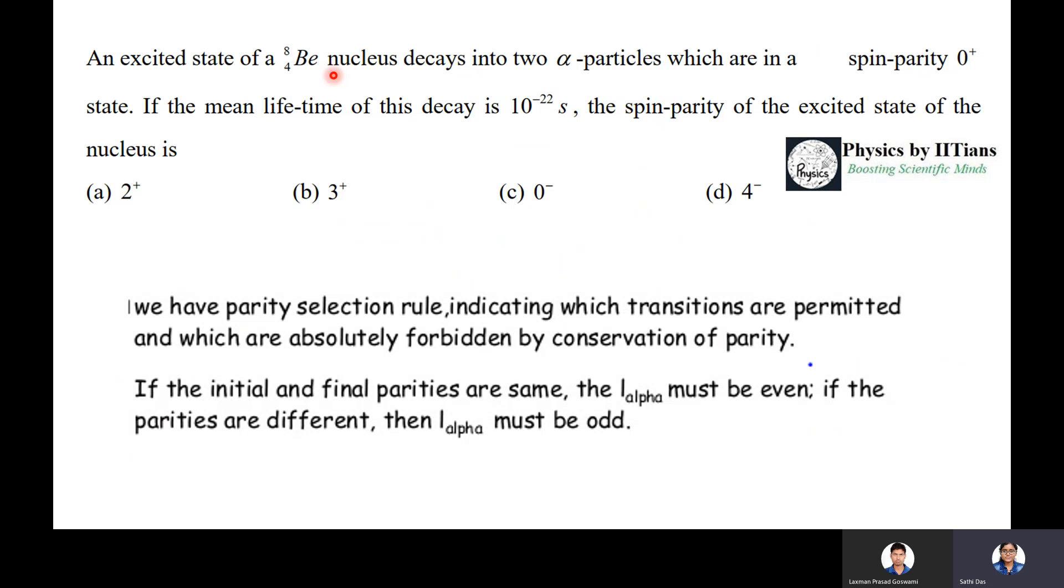The first thing is the excited state of the beryllium nucleus decays into two alpha particles. Don't worry about this. You should focus on the spin parity of the beryllium nucleus. The spin parity of the beryllium nucleus is 0+. Now, what is the spin parity of the excited beryllium nucleus? That is the question.